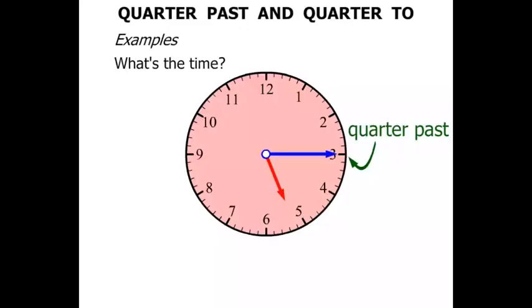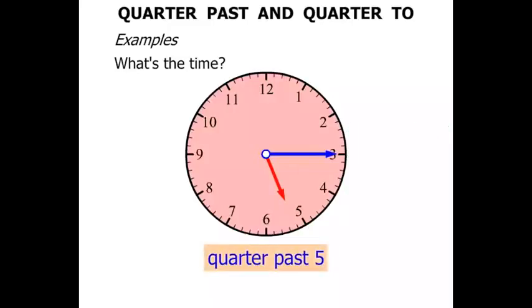So we've got to think quarter past what? We're looking at the hour hand. You can see that it's just gone past the five. Hence it's quarter past five. And that in digital form is 5.15.